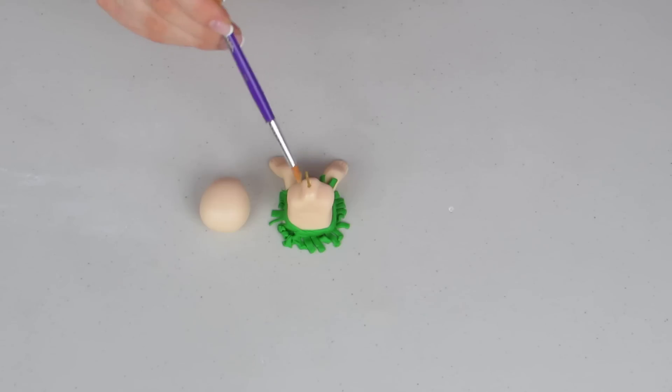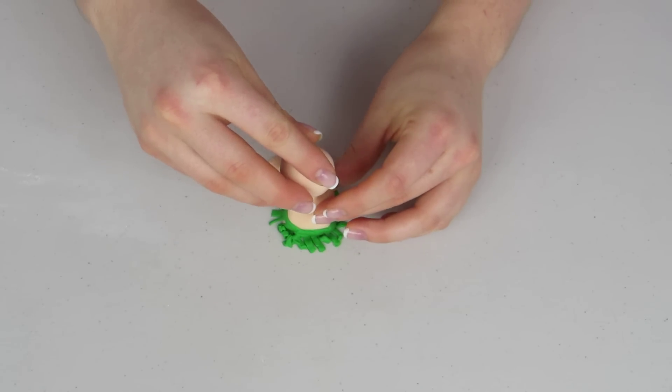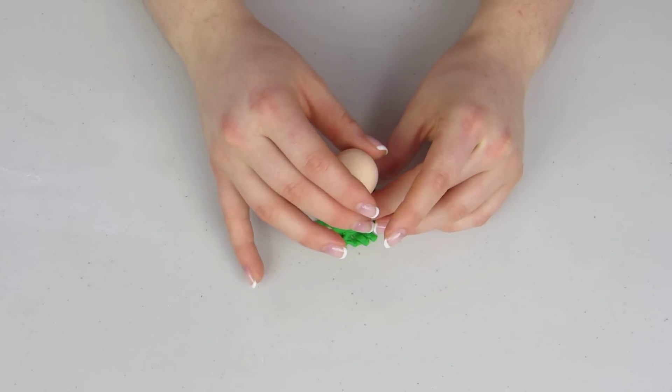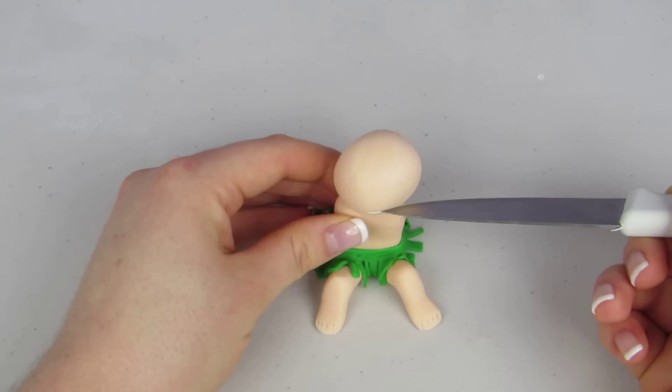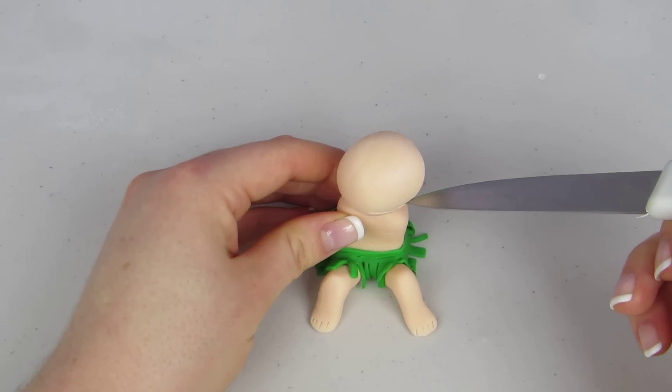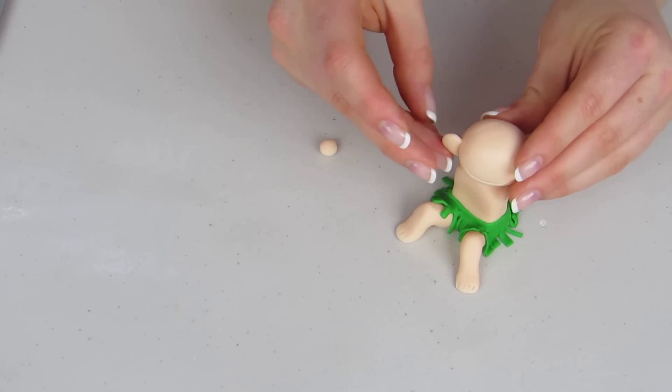For his head you're gonna need 0.6 ounces of fondant. I'm just gonna roll that into a ball and then glue that right down to his body. I'm gonna turn his head so he's kind of looking over his shoulder and then just using my knife I'm gonna give him a little smile.